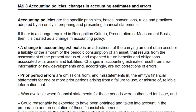Now let's move to change in accounting estimate. Whenever management prepares financial statements, there are some things that are not clear-cut or accurate, and we need to make assumptions based on experience and judgment. For example, if we buy an asset and initially thought it could be used for 4 years — that is, the estimated useful life is 4 years — it is an estimated life, not the actual one.